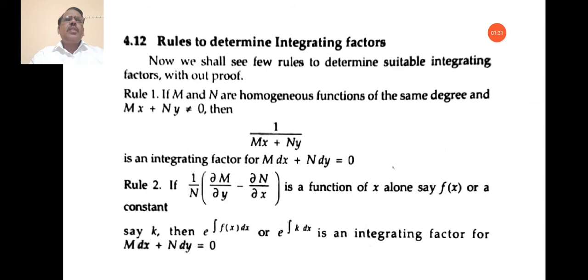Rule 1: If M and N are homogeneous functions of the same degree and Mx plus Ny is not equal to 0, then 1 by (Mx + Ny) is an integrating factor for Mdx + Ndy. That means if Mdx + Ndy is the given differential equation and which is not exact — that means ∂M/∂y is not equal to ∂N/∂x — then 1 by (Mx + Ny) is an integrating factor.